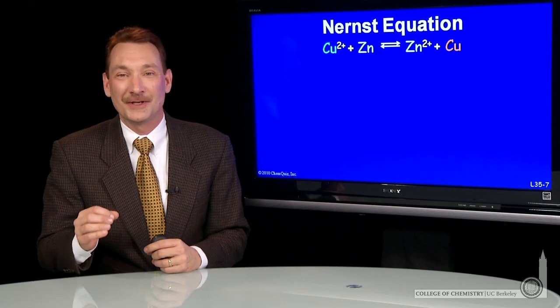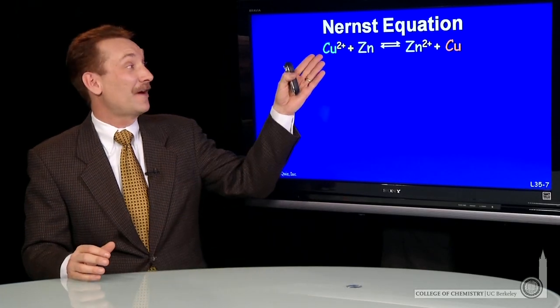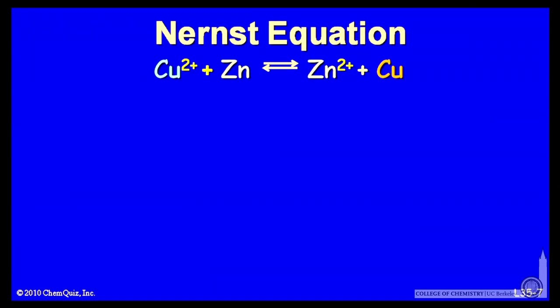We can calculate standard cell potentials in the standard state. So if I have copper ions at one molar concentration and zinc ions at one molar concentration and pure zinc and pure copper metals, I can calculate the cell potential.